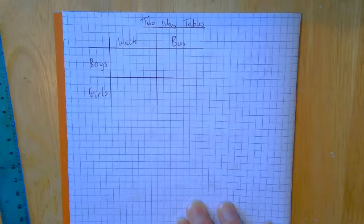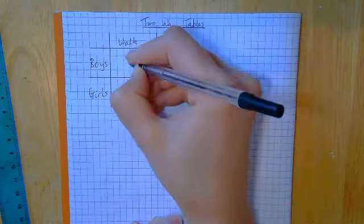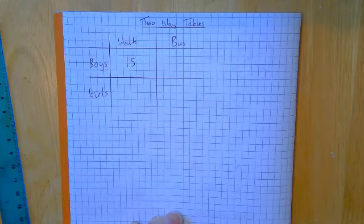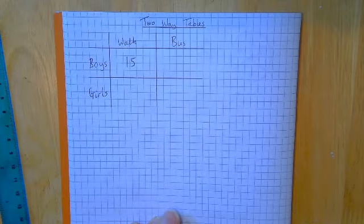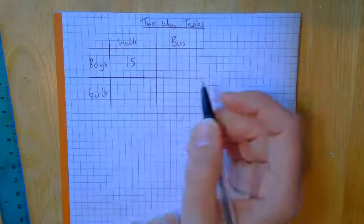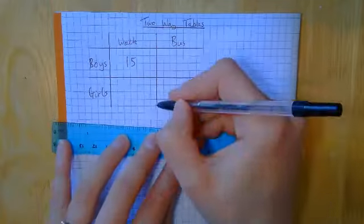And then we will be given information and we'll have to put that information into the correct place. So they might tell us that 15 boys walked to school, so into here we would put 15. They might tell us that in total 25 people walked to school. Now at the minute our table isn't equipped for that.